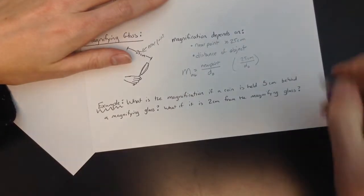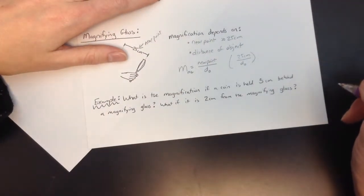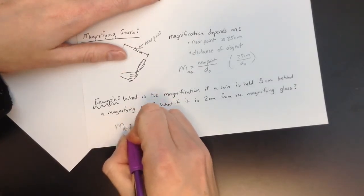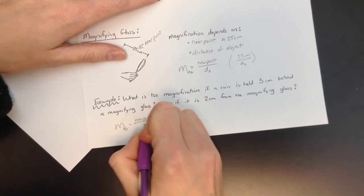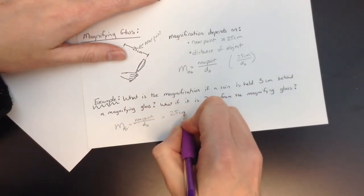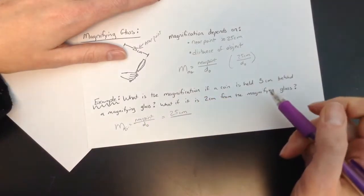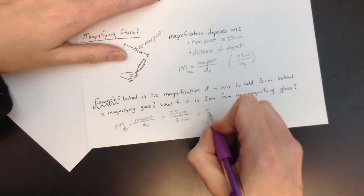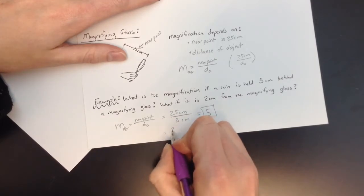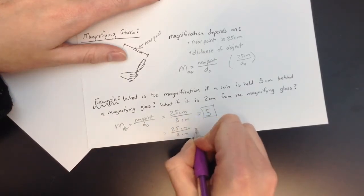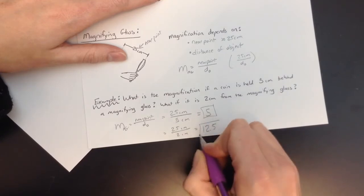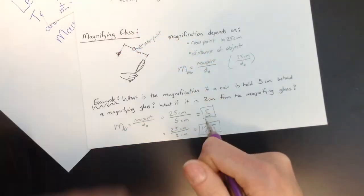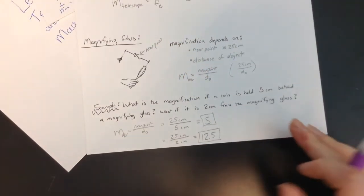Here's our example. What is the magnification of a coin if a coin is held 5 centimeters behind a magnifying glass? And then what if it's 2 centimeters? So we'll write down the equation here, near point divided by the object distance. So 25 centimeters is the near point, even though it doesn't say it in the question. That's what I'm going to assume. And then it's 5 centimeters away. So that gives me a magnification of 5. And if it's only 2 centimeters away, then I would get an even greater magnification. So it'll be 12.5. So think about it, the last time you used a magnifying glass, when you put the object closer, then you could see even better what was going on there.